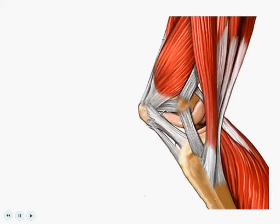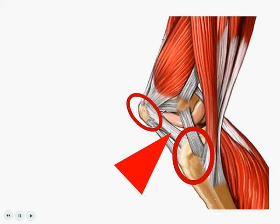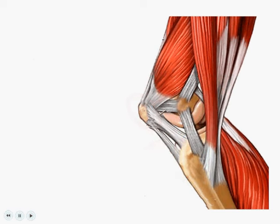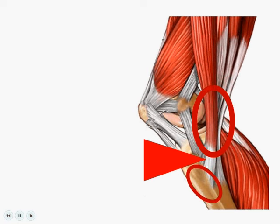Now let's look at this picture of a knee. If we look at this thing right here, what is that connecting? Well, it's connecting some bone to some more bone — bone to bone. What is in between bone to bone must be a ligament, sort of spells 'blob.' Now let's have a look at another part of this diagram. What is this that's connecting some bone to some muscle? If it's connecting bone to muscle, then what is in between bone and muscle must be a tendon, because it spells out 'bottom.'